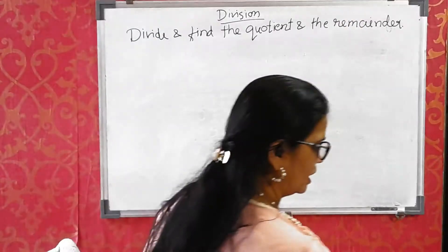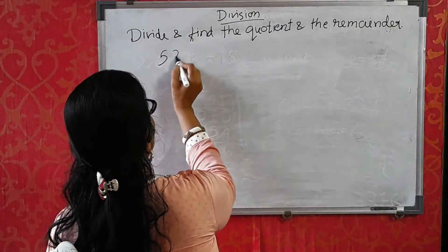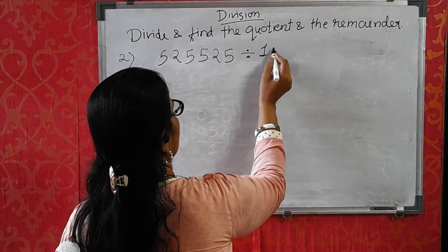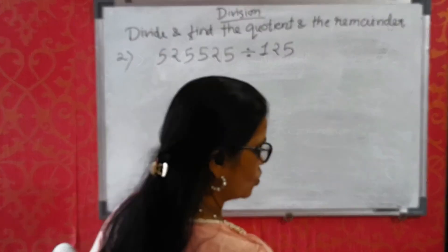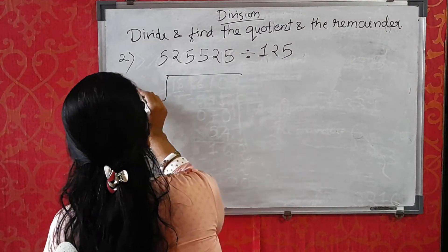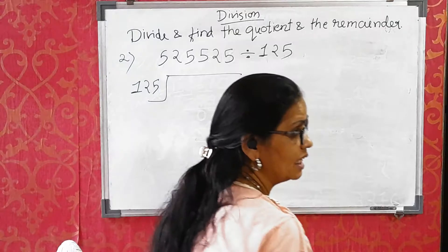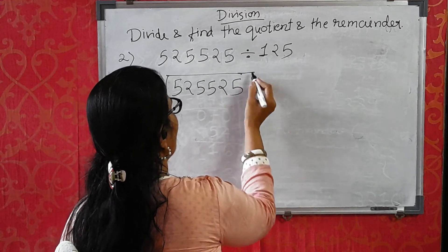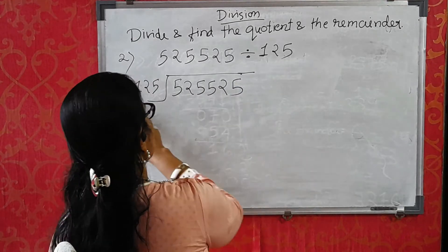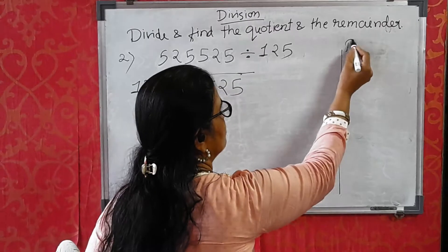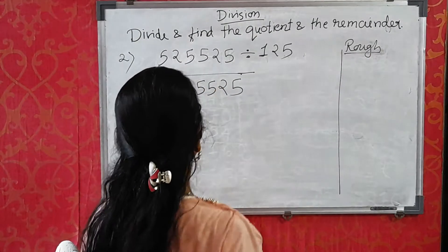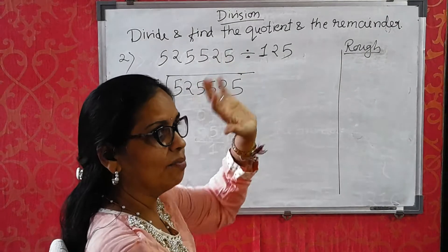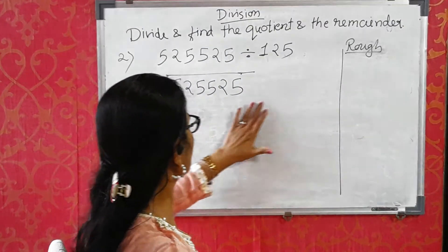Now the second sum: 525525 divided by 125. The divisor is 3 digits. As I told you, we don't know the 3-digit table. So here is 525525 as dividend and 125 as divisor. Children, you have to make a rough column so that it is easy for you to solve the sum. We cannot write out the 125 times table up to 10 multiplications — that will take your time to solve the sum.